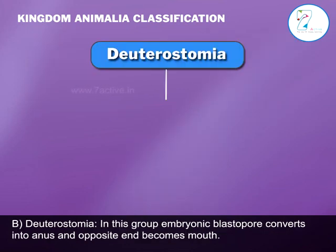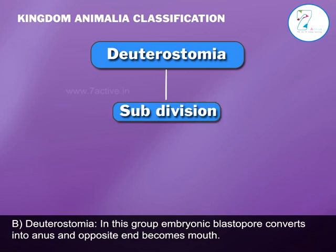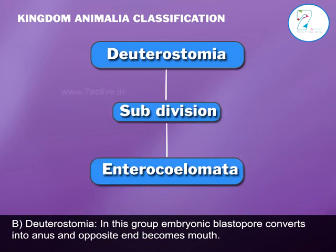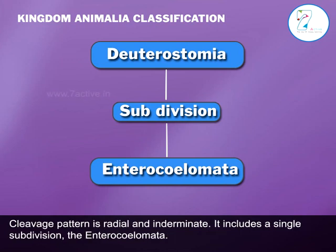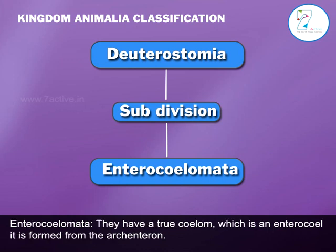B. Deuterostomia: In this group, the embryonic blastopore converts into the anus and the opposite end becomes the mouth. The cleavage pattern is radial and indeterminate. It includes a single subdivision: the Enterocoelomata.